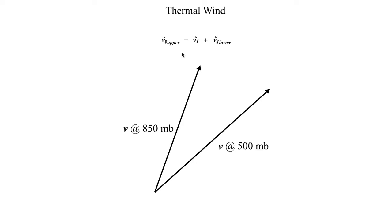If we apply that logic — an extension of the idea of a vector sum — we take the tail of the thermal wind vector, attach it to the tip of the geostrophic wind vector at the lower level. Then we connect that with the tip of the geostrophic wind at the upper level to get our thermal wind vector represented by the red arrow here.